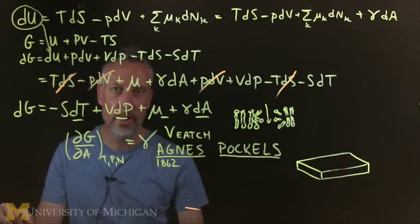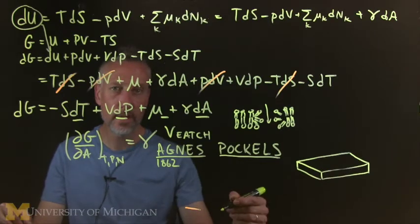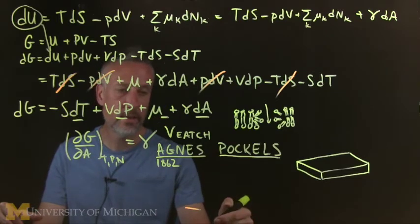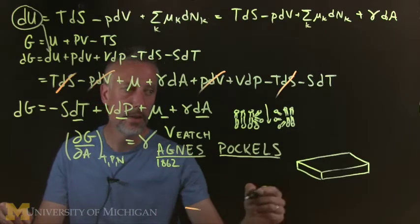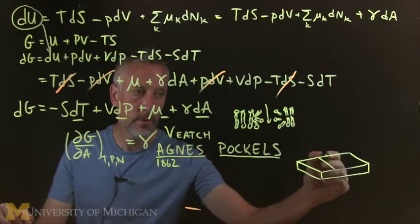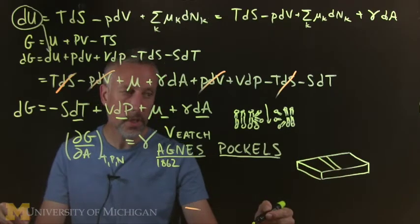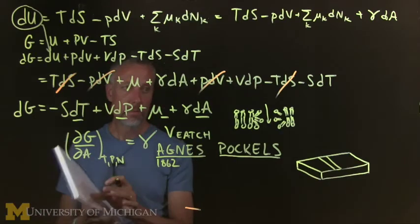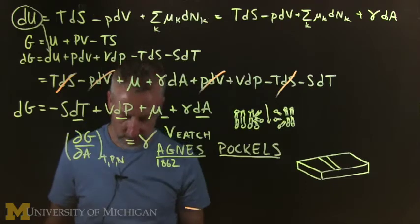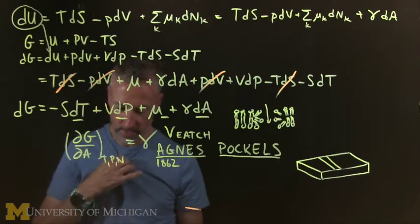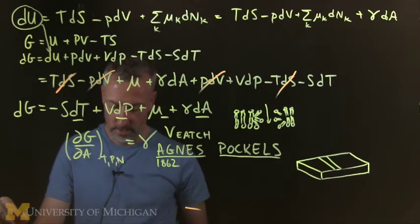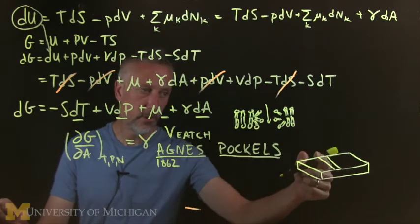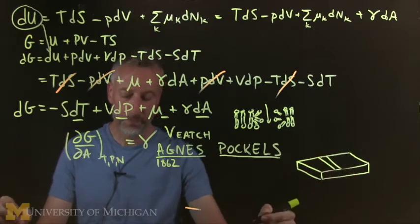So she decided that she wanted to try to understand this more quantitatively. So she took equipment that you essentially could find in a kitchen in the 1870s and 80s. So she made this gadget. It's made out of tin. We don't really use tin anymore but that's what she used. This is before it was easy to get aluminum. Aluminum is a very complicated thing to get if you can't do electrochemistry.